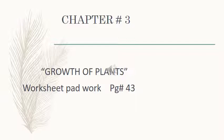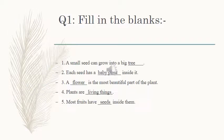Open the page number 43. Question number 1 is Fill in the Blanks. Number 1: A small seed can grow into a big dash. What does it become? A big tree. Number 2: Each seed has a dash inside it. What happens inside each small seed?